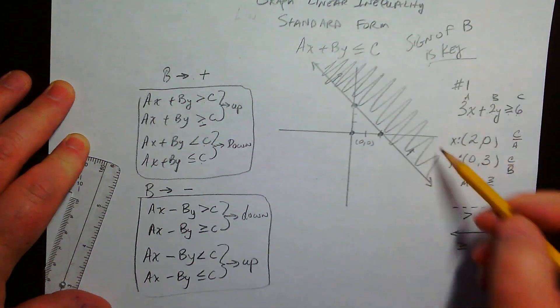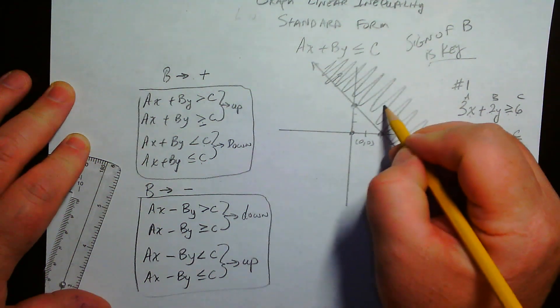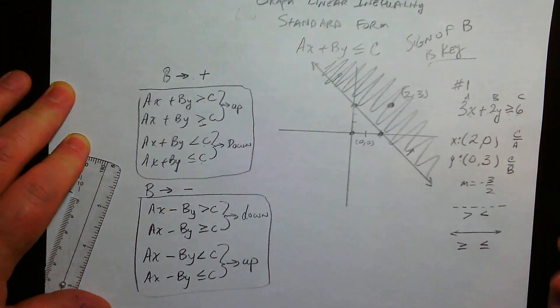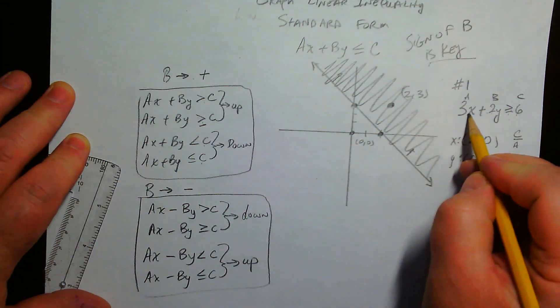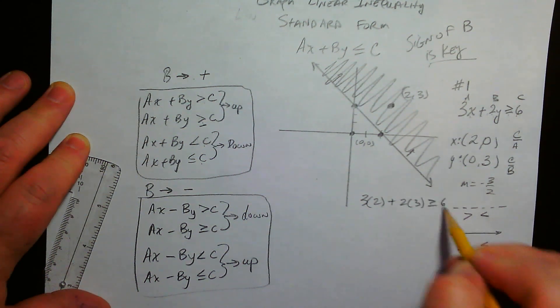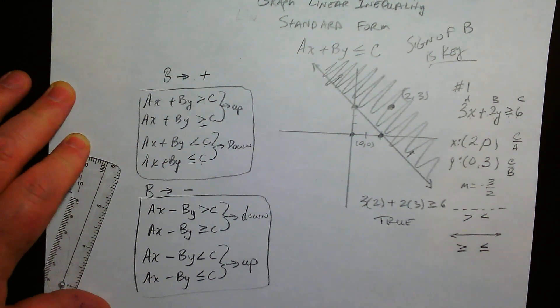Which we knew was the case anyway because we did the test point. So that means any point over here would be a solution. So, like, 2, 3 would be a solution if we plugged it in. So if we plugged in 2 and then 3, so if we did 3 times 2 plus 2 times 3, we would get something greater than or equal to 6. That is a true thing, which is what we'd expect. Boom, done.